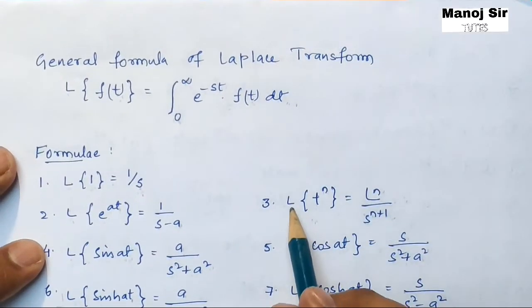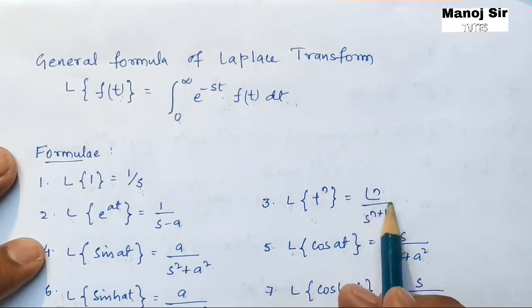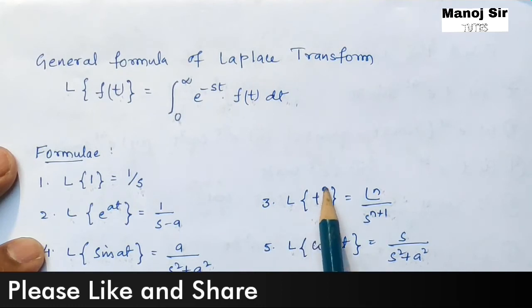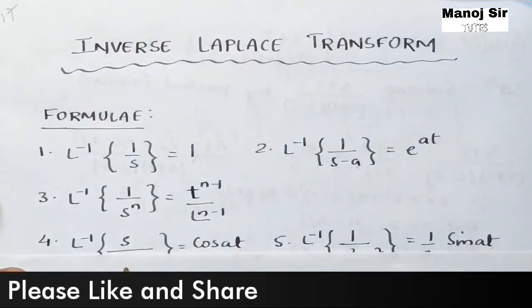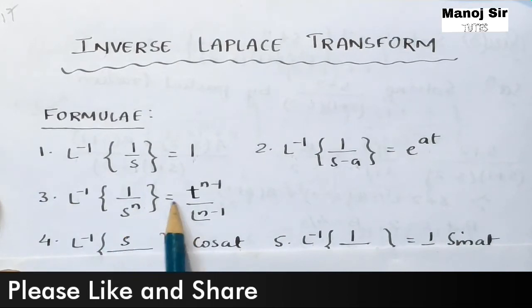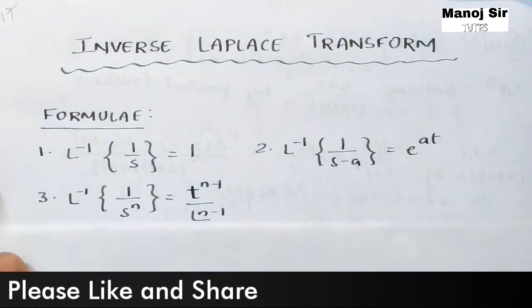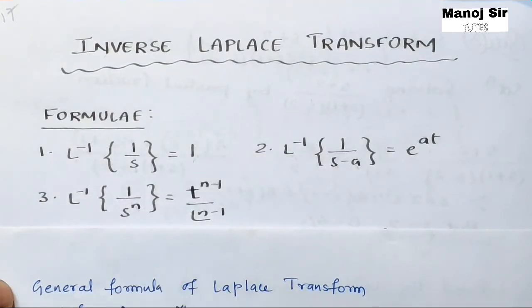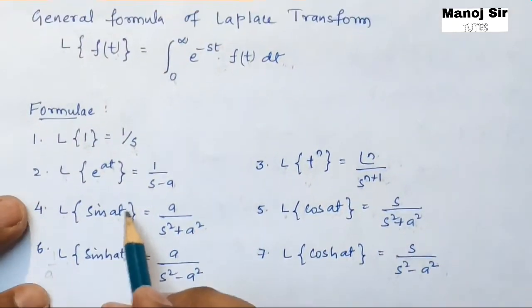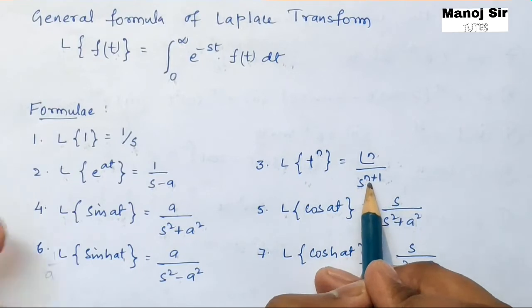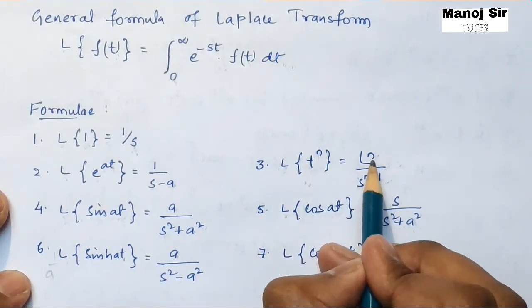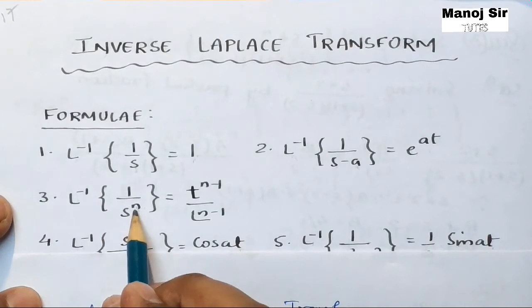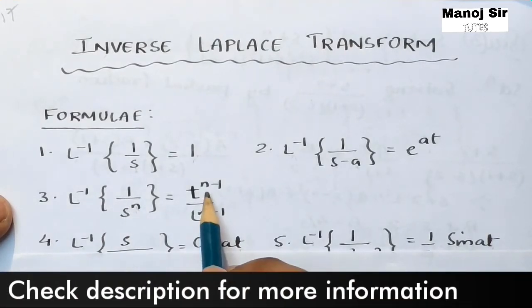Now coming to the third formula: Laplace transform of t^n equals n! / s^(n+1). So the inverse Laplace transform of 1/s^n equals t^(n−1) / (n−1)!. Notice that when the power of s is n+1, the result involves t^n; when the power of s is n, the result involves t^(n−1) and (n−1)!.